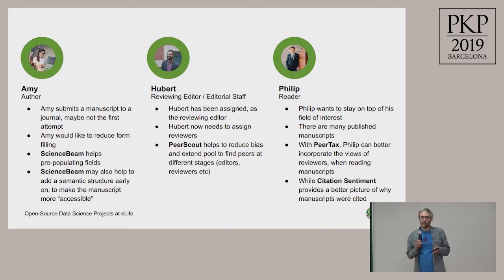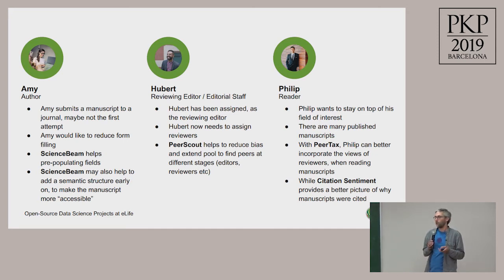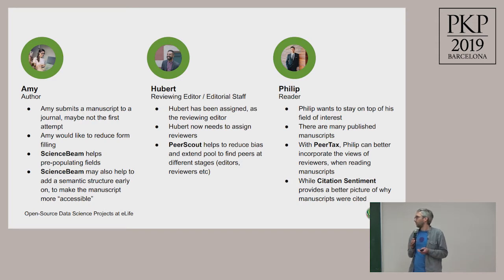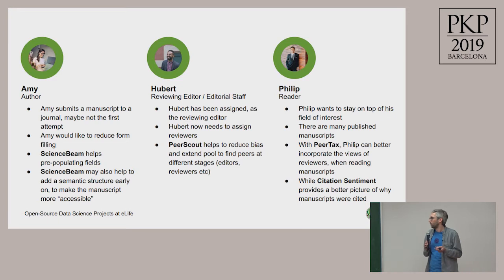To bring the project into context, I'll use three actors. The first is Amy, the author. Amy wants to submit a manuscript — she maybe submitted to another journal before and got rejected. Now she needs to submit again and doesn't really like filling in lots of forms. ScienceBeam can help convert the document, which already has information, to semantic information and pre-fill the form. ScienceBeam could also extract the whole document to make it more accessible, since PDF wouldn't be as accessible.